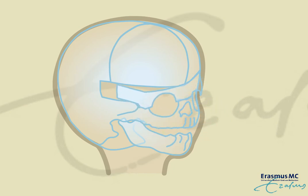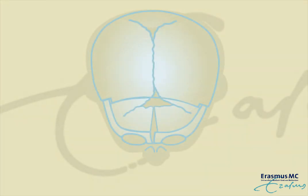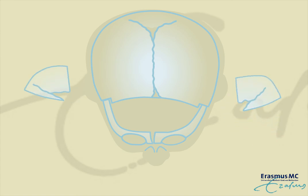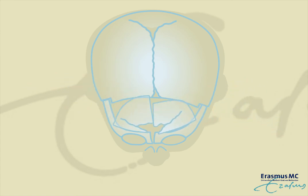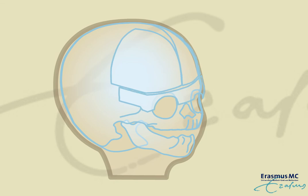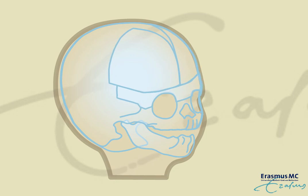After this correction, the rims are replaced. The bones of the forehead are flipped from right to left and from left to right. This way, a round contour of the forehead is achieved that aligns with the upper orbital rims.